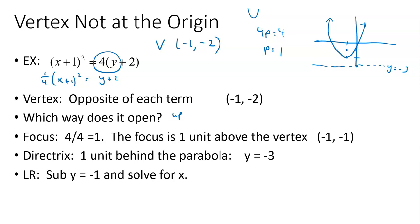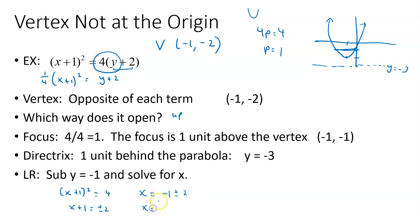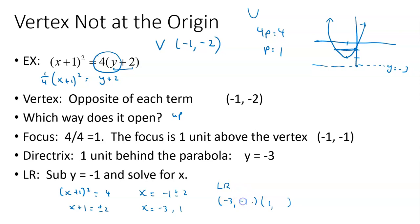For the latus rectum, take y equals negative 1 and substitute it in to solve for x. If y equals negative 1, then y plus 2 equals 1, so we get x plus 1 squared equals 4 times 1. Taking the square root of both sides: x plus 1 equals plus or minus 2, so x equals negative 1 plus or minus 2. That gives x equals negative 3 or x equals 1. The y-values are both negative 1, so the endpoints are (negative 3, negative 1) and (1, negative 1). Note: negative 3 is the directrix value, not a y-coordinate here.